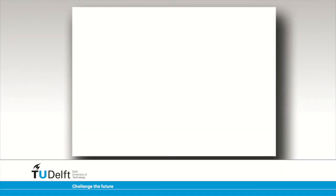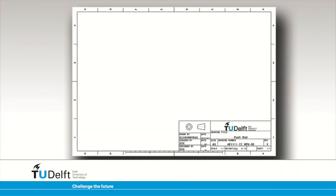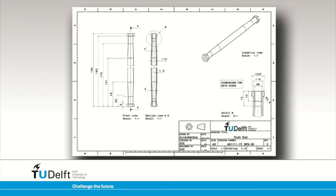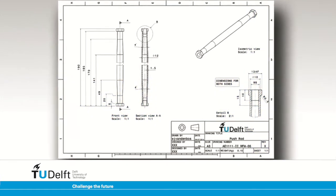Every technical drawing contains a frame and a title block. The frame delimits the drawing — all drawing items are present within the frame, so geometry or dimensions should not intersect with the frame. Letters and numerals are placed in the frame to address a certain location on the drawing. For example, you can refer to detail view B of the pushrod drawing located at section A2 using the section reference to locate it on the drawing.